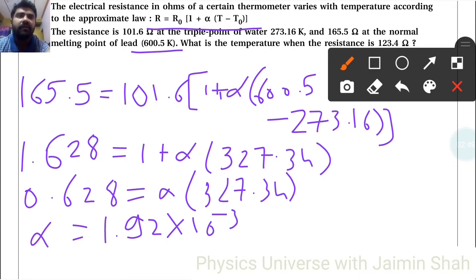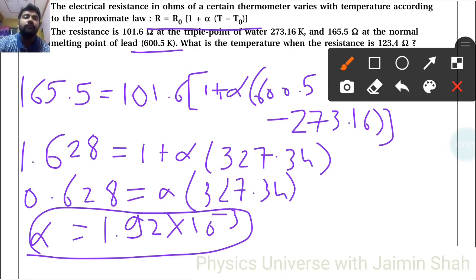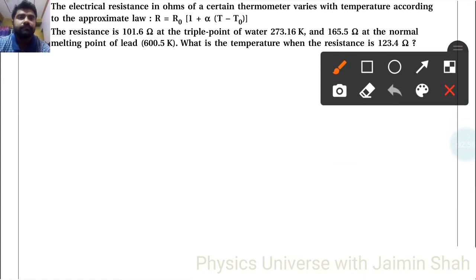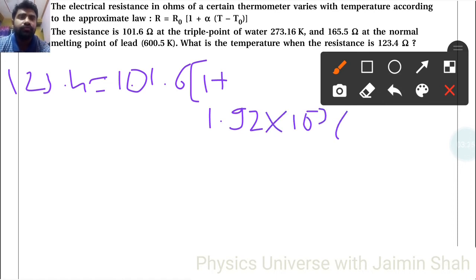Now we have to find temperature. Using the same formula but now my resistance is 123.4 = 101.6[1 + 1.92 × 10⁻³(T - 273.16)].